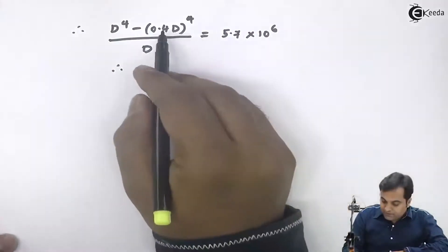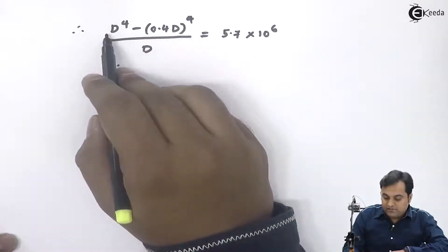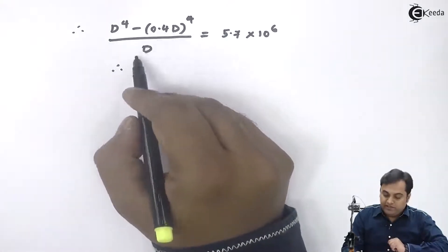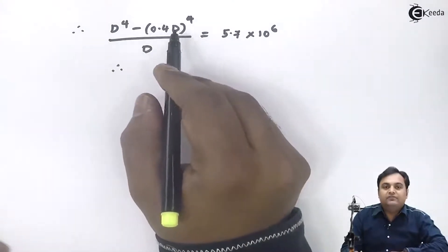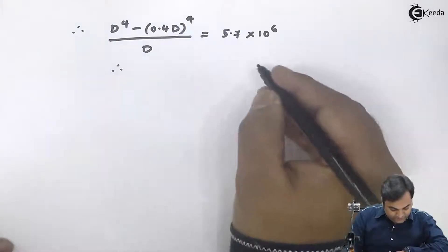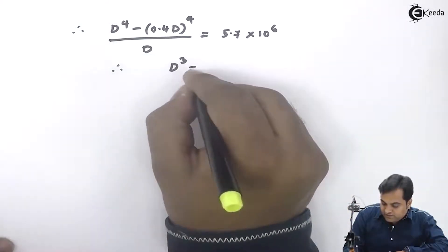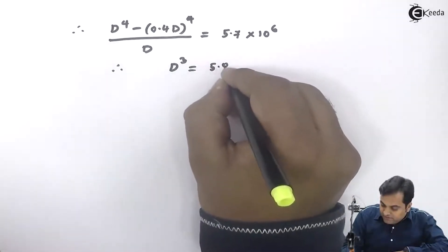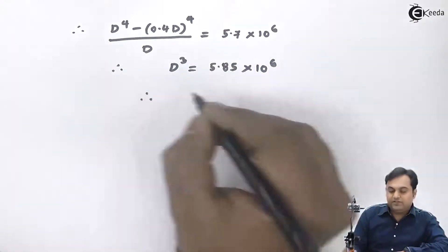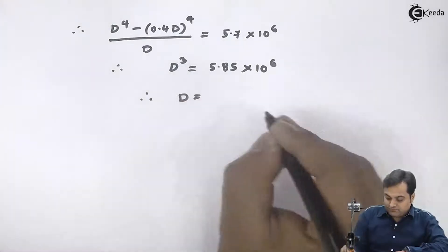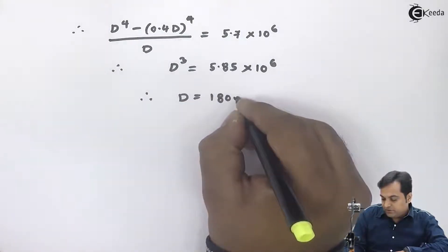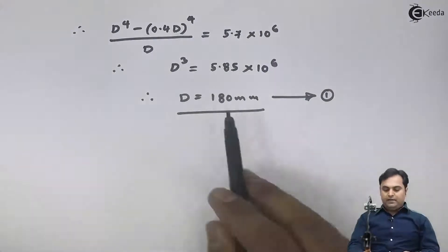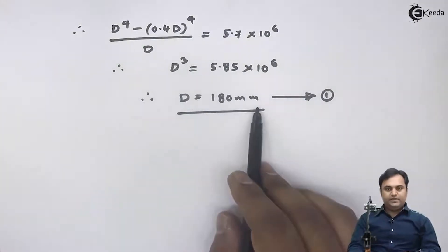Expanding: (1 − 0.4⁴) × D⁴ divided by D, so D and D cancel leaving D³ with a coefficient. Dividing 5.7 × 10⁶ by the coefficient gives 5.85 × 10⁶, and taking the cube root gives the outer diameter as 180 mm. I'll keep this as equation number one. Based on strength criteria, the external diameter of the hollow shaft is 180 mm.